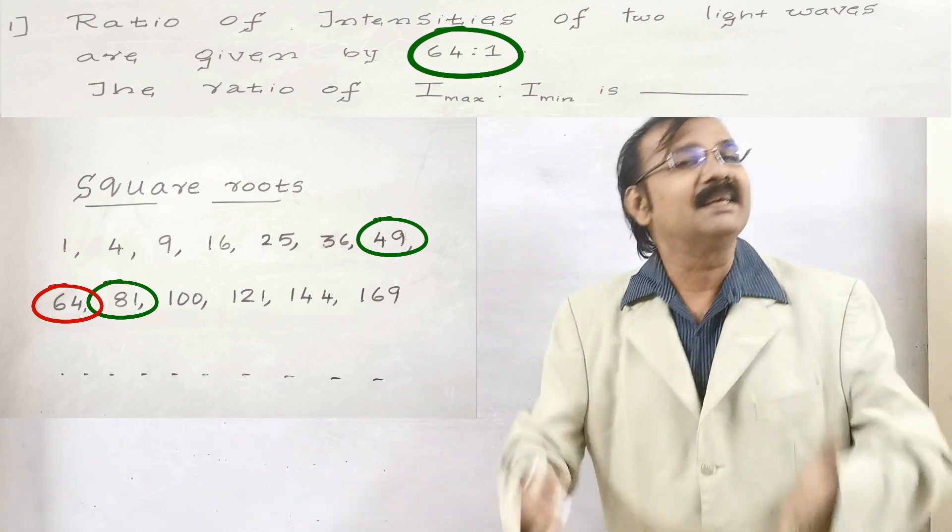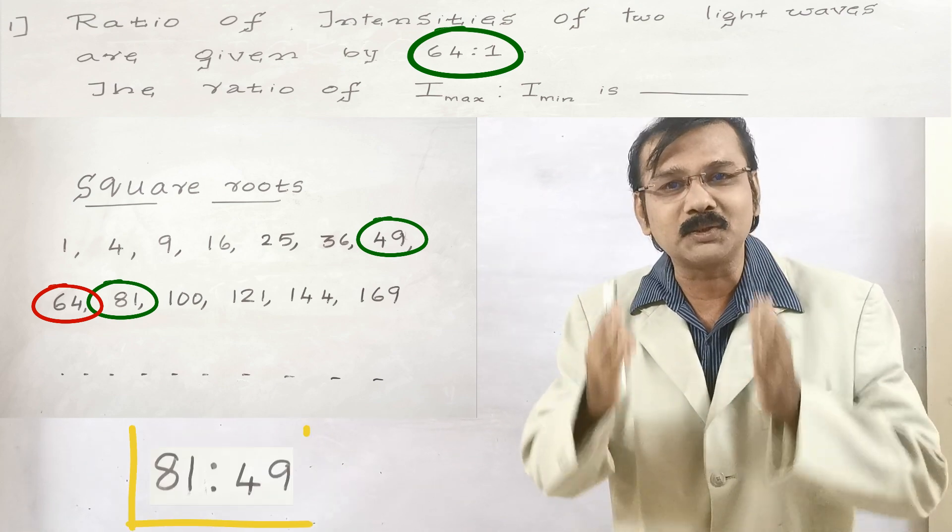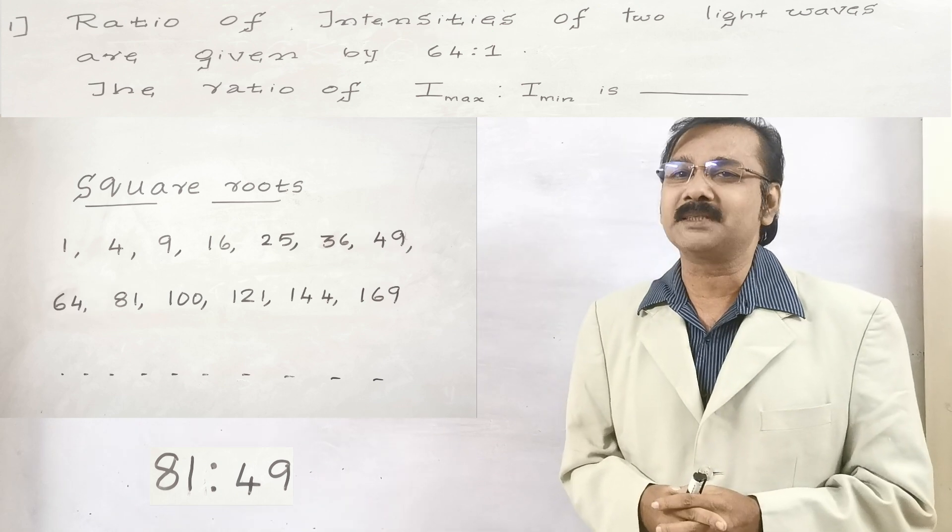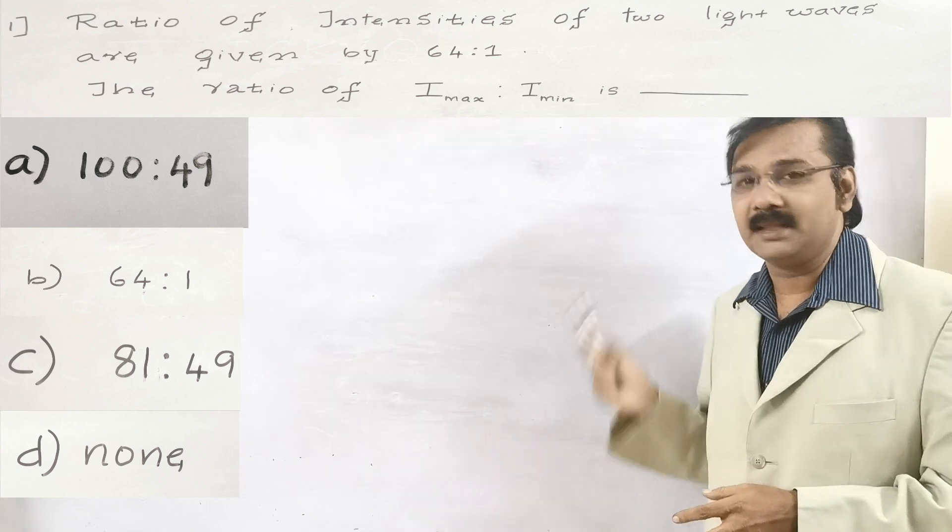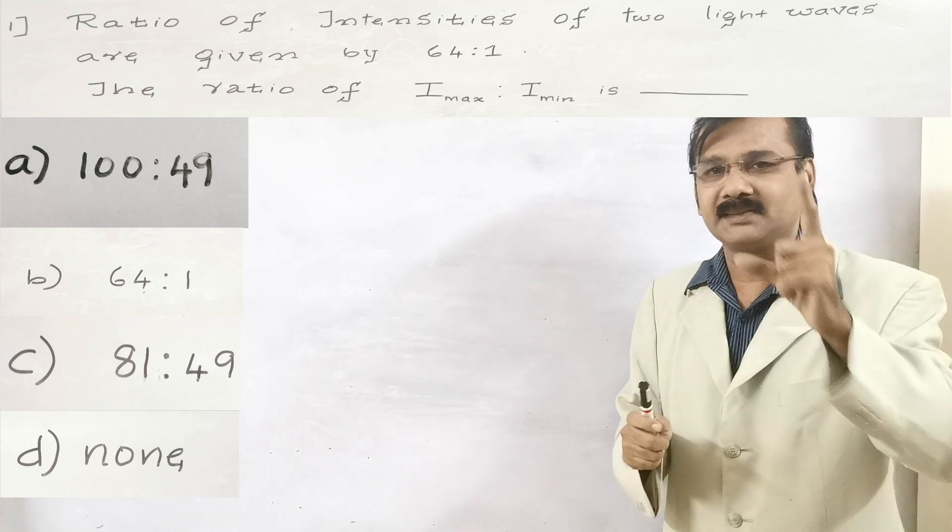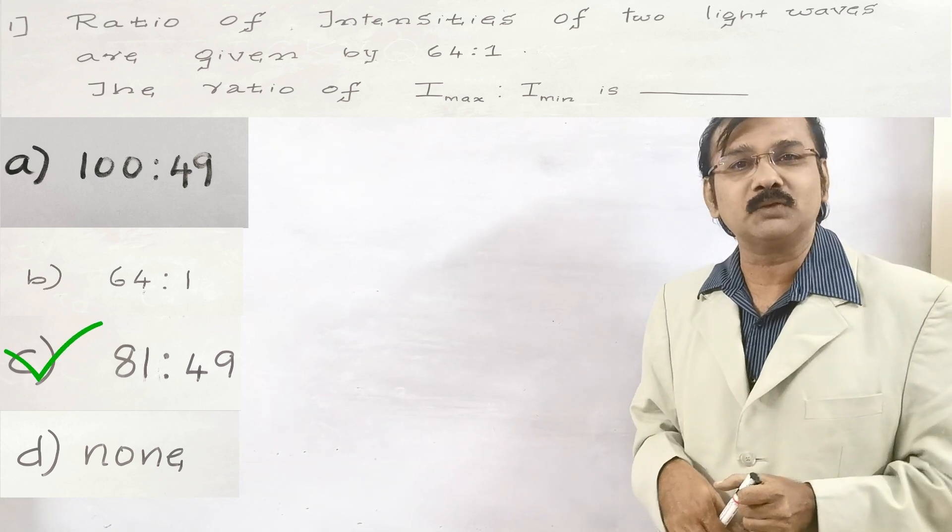Then our answer is, yes, you are right. We got the answer that 81 is to 49. Then what is the option? The options A, B, C has been given. Again I am just plotting on the screen. Then where is the option there? Yes, it is right. The option is C. It is 81 is to 49.